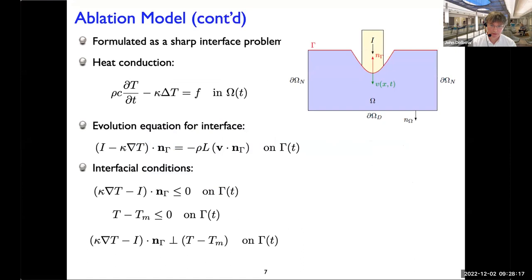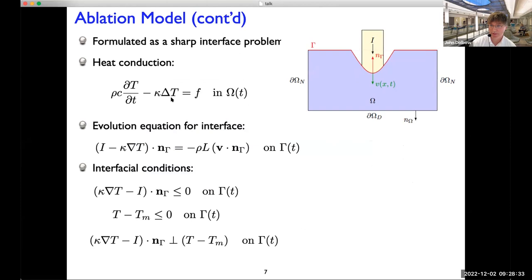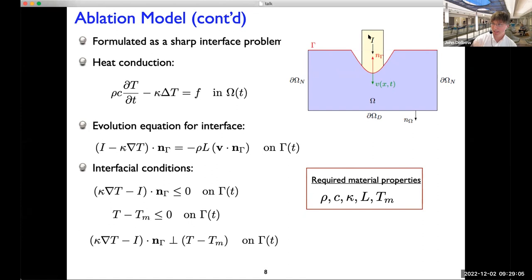The model is almost entirely energetic in nature. We capture the evolution of the temperature field T throughout the sample in space and time — essentially transient heat conduction. For surface evolution, the model is also energetic: the difference between the incoming laser energy and the thermal resistance of the material accounts for how fast the surface moves with velocity V in proportion to its density and latent heat. Additional conditions stipulate that the temperature on the surface can exceed the melting temperature. The model only requires thermal properties of the material, all of which are easily measurable or estimable independently.